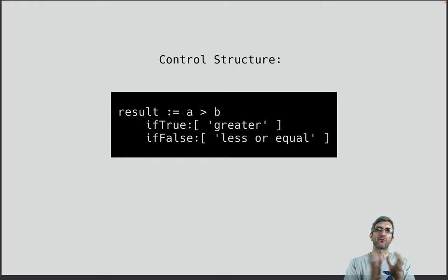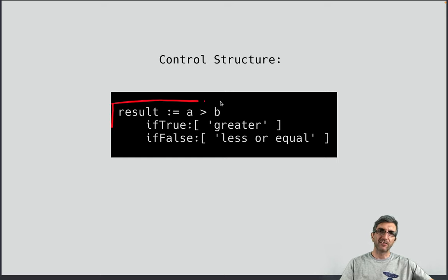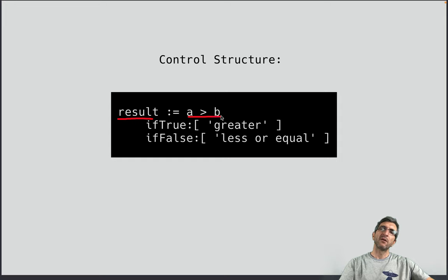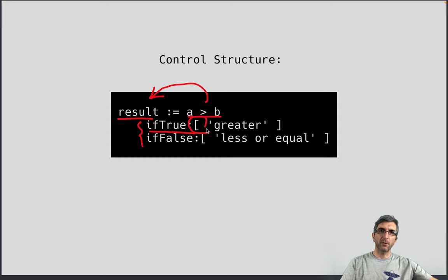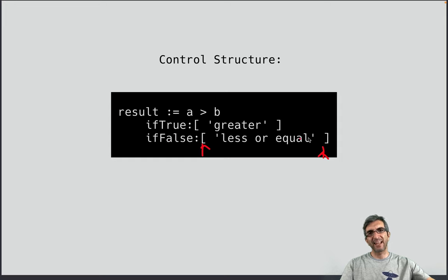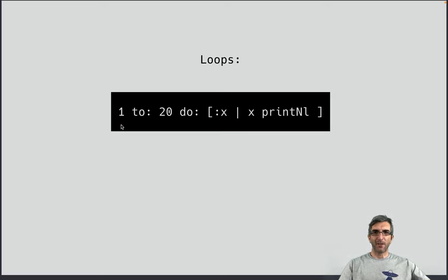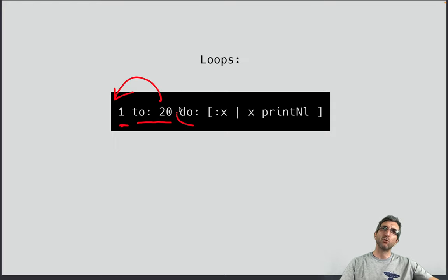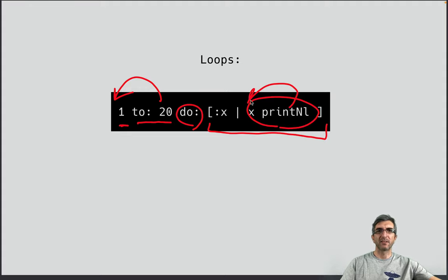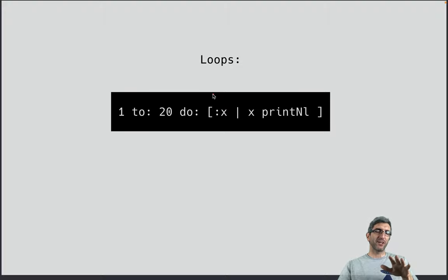As you can see it's a different concept from what we know — that's why it's good to spend a couple of hours getting familiar with it. Any new language should bring new thinking. This is how control structures work: assignments use a colon-equals like Pascal. For an if-else, you have a condition and send 'ifTrue' with a block and 'ifFalse' with another block — you're sending messages to the statement. For loops, you send a message like 'to: 20 do:' with a block that prints each value.